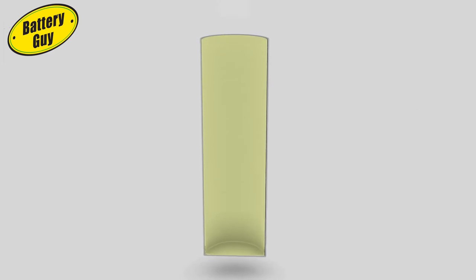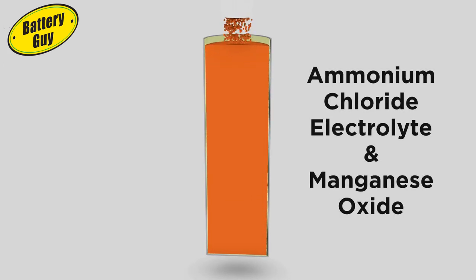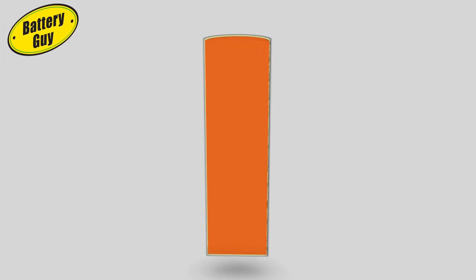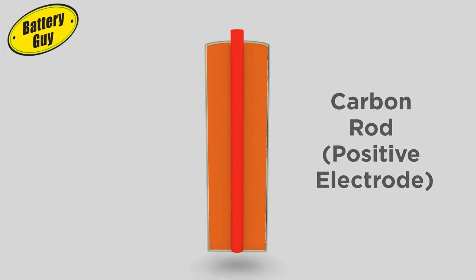The can is then filled with a damp, powdered mixture of ammonium chloride electrolyte and manganese oxide. This is the cathode material. A carbon rod for collecting electricity is inserted into this cathode material. This is the positive electrode.